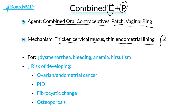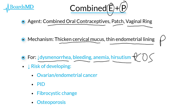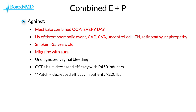There are several benefits to combined estrogen and progesterone hormonal agents, which helps explain why combined oral contraceptives are so commonly used. Benefits include decreasing dysmenorrhea, decreasing bleeding during periods and therefore anemia, and helping patients struggling with hirsutism — classically used in patients with PCOS. It has also been demonstrated that combined hormonal contraceptives decrease the risk for development of ovarian and endometrial cancer, and also decrease the risk of pelvic inflammatory disease, fibrocystic change of the breast, and osteoporosis.